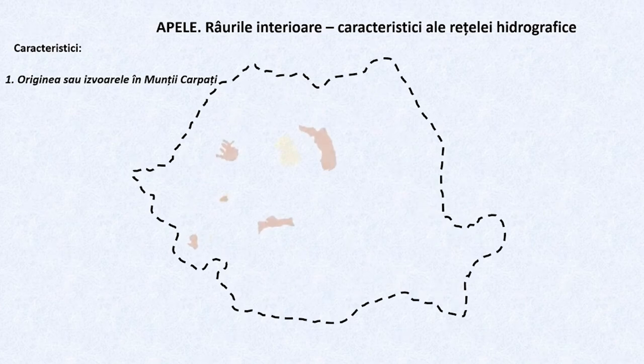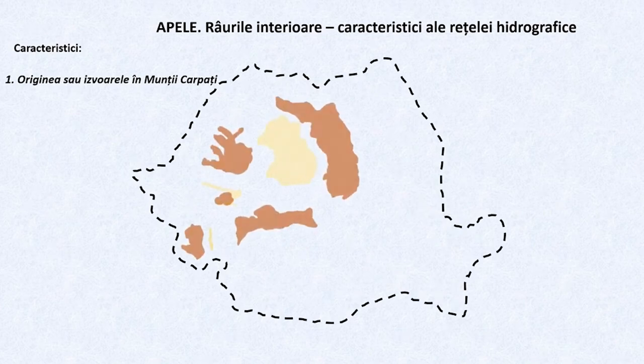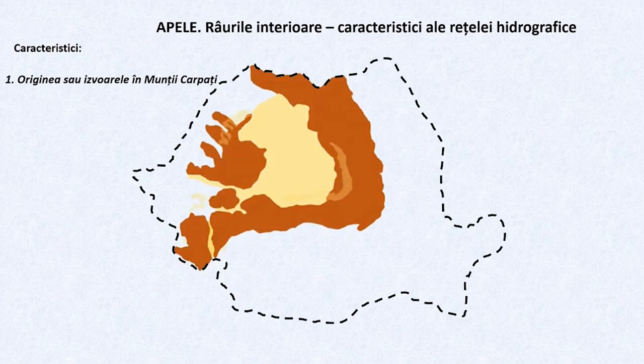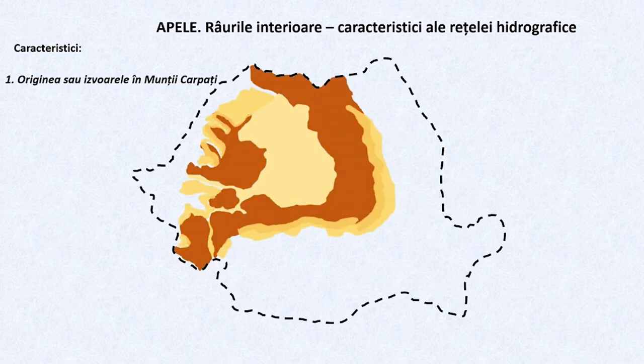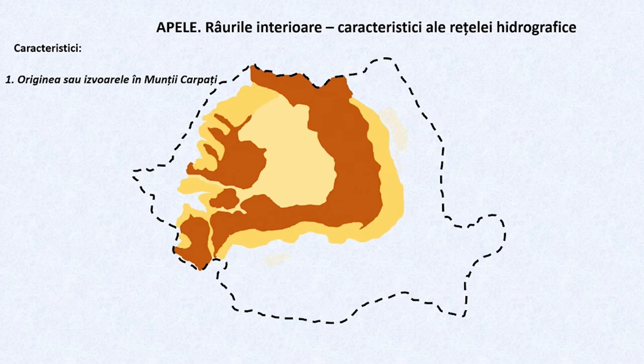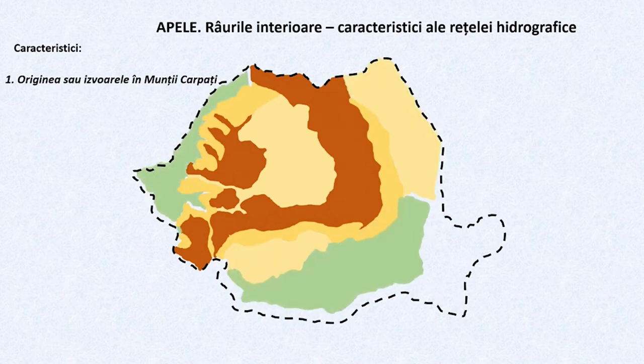Dragi elevi, haideți să analizăm împreună câteva caracteristici ale rețelei hidrografice a României. Să spunem de la început că un rol determinant în evoluția rețelei de râuri a României l-a avut dispunerea și simetria unităților de relief. Pentru a înțelege acest rol, să urmărim într-o prezentare dinamică simplificată dispunerea unităților de relief ale României.